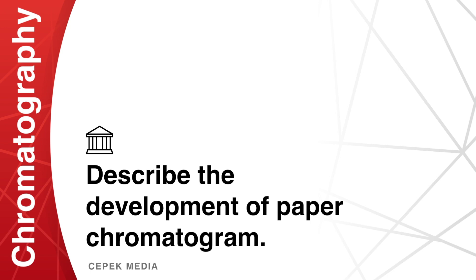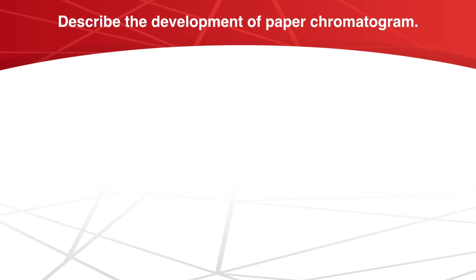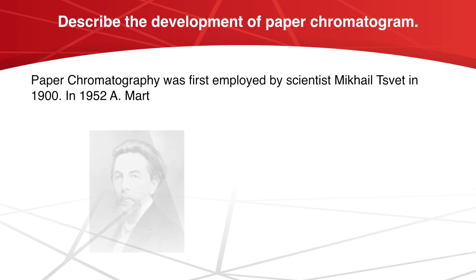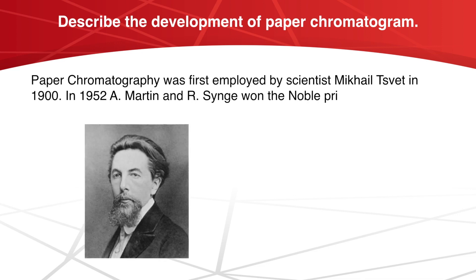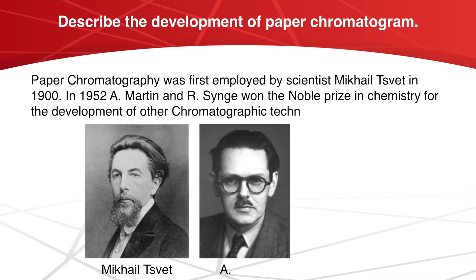Paper chromatography was first employed by scientist Mikhail Swat in 1900. In 1952, A. Martin and R. Sien won the Nobel Prize in Chemistry for the development of other chromatographic techniques.